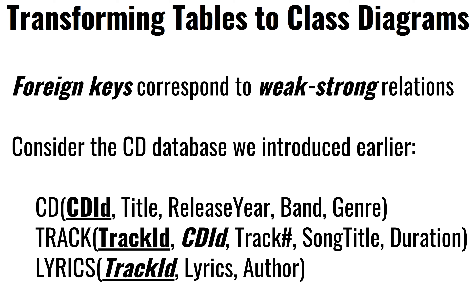Having a field that is both a primary key and a foreign key is something we haven't seen before. This is the example that allows us to implement a one-to-one relationship — there's only one of these; it's unique but refers to something else. In our case, a particular track presumably has just one lyric, and one song has just one lyric.